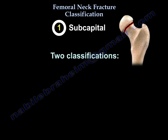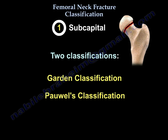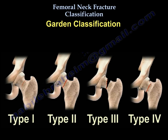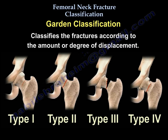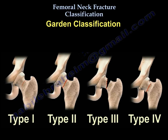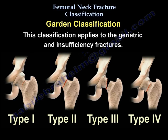The subcapital fracture has two famous classifications: the Garden classification and the Pauwels classification. Starting with Garden's classification — it classifies fractures according to the amount or degree of displacement, and relates the degree of displacement to the risk of vascular disruption. This classification applies to geriatric and insufficiency fractures.